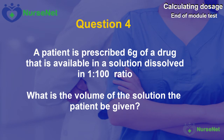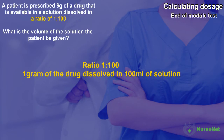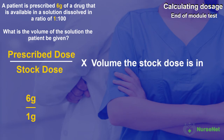Question 4. A patient is prescribed 6g of a drug that is available in a solution dissolved in a ratio of 1 to 100. What is the volume of the solution the patient should be given? The dissolved ratio of 1 to 100 basically means that for every 1g of drug it's dissolved in a solution of 100ml. So we have a prescribed dose of 6g and a stock dose of 1g. 6 divided by 1 gives us 6. 6 multiplied by 100ml gives us our answer of 600ml.